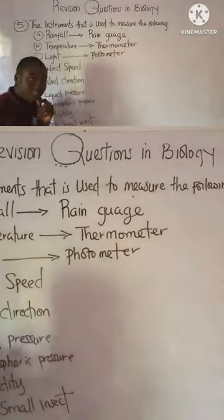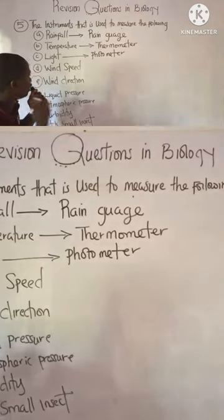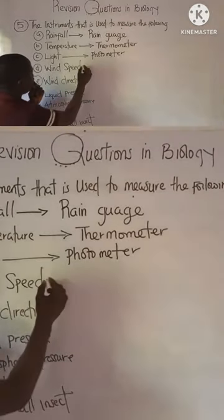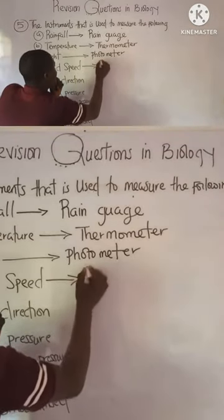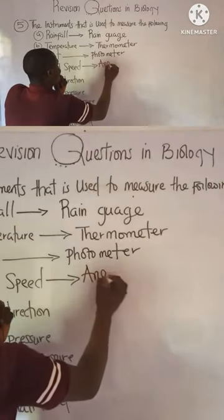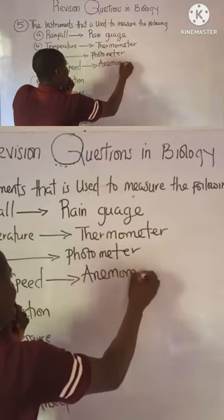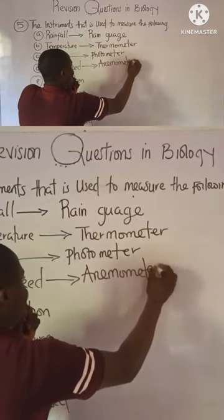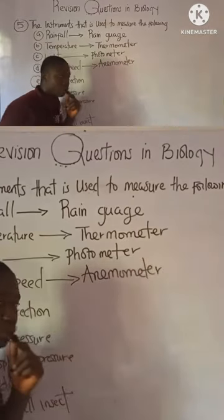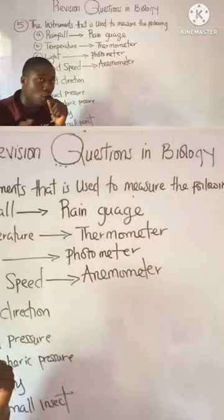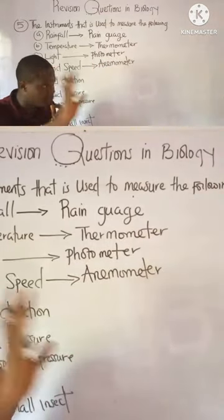Now, what is the instrument used to measure wind speed? It is called the anemometer. This is the instrument used to measure wind speed.